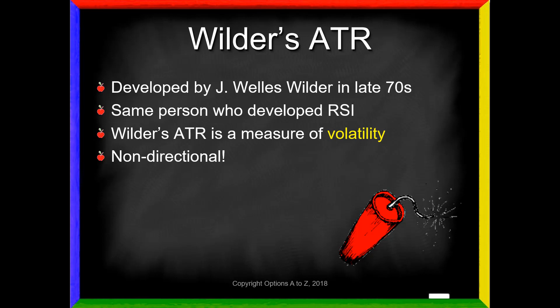Volatility is the absolute most important ingredient. It is the essence of an option. I will be posting more videos in the future about why that is. But for right now, let's take a look at the technical indicator of Wilder's average true range and how it works.